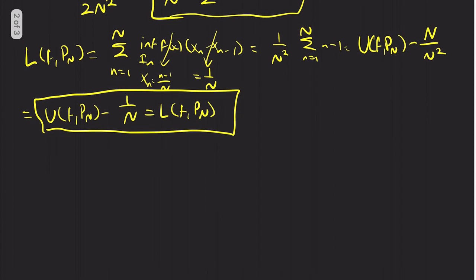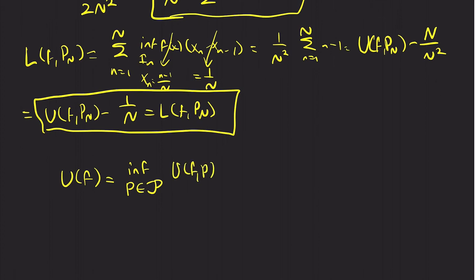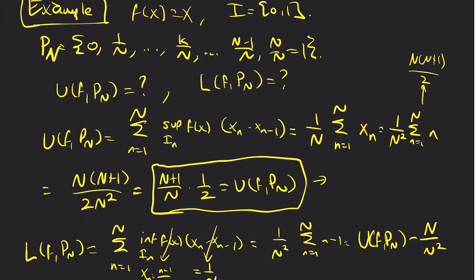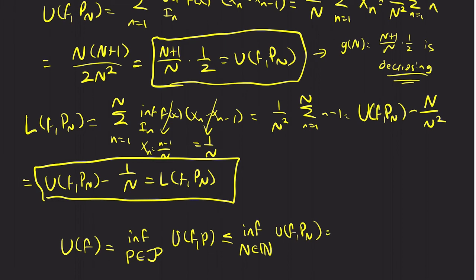So first, let's look at the upper limit. U(F) is the infimum over all P in script P of U(F,P), and that is certainly less than or equal to the infimum over N in the natural numbers of U(F, P_N). Now notice that U(F, P_N) is a decreasing, bounded sequence, so it converges to its infimum. This is just the limit as N goes to infinity of (N+1)/N times 1/2, and that's just 1/2. So we have a bound: U(F) ≤ 1/2.